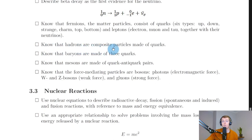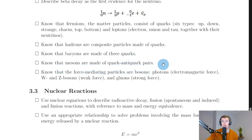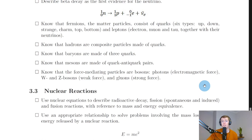You should know that hadrons are composite particles made of quarks. Composite particles are the opposite of fundamental particles — composite particles are made up of other particles, whereas fundamental particles are not; they are in their simplest form. Baryons are made of three quarks, and mesons are made of quark-anti-quark pairs, so only two quarks. Lastly, the force-mediating particles are bosons: photons for the electromagnetic force, W and Z bosons for the weak force, and gluons for the strong force. The graviton, the force-mediating particle for the gravitational force, is hypothetical and has not yet been discovered.